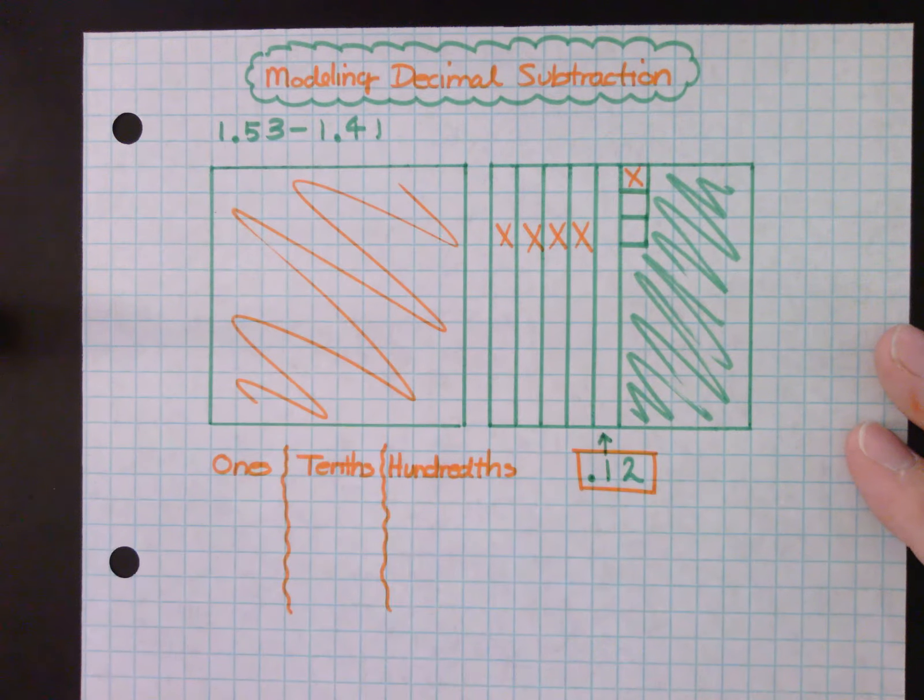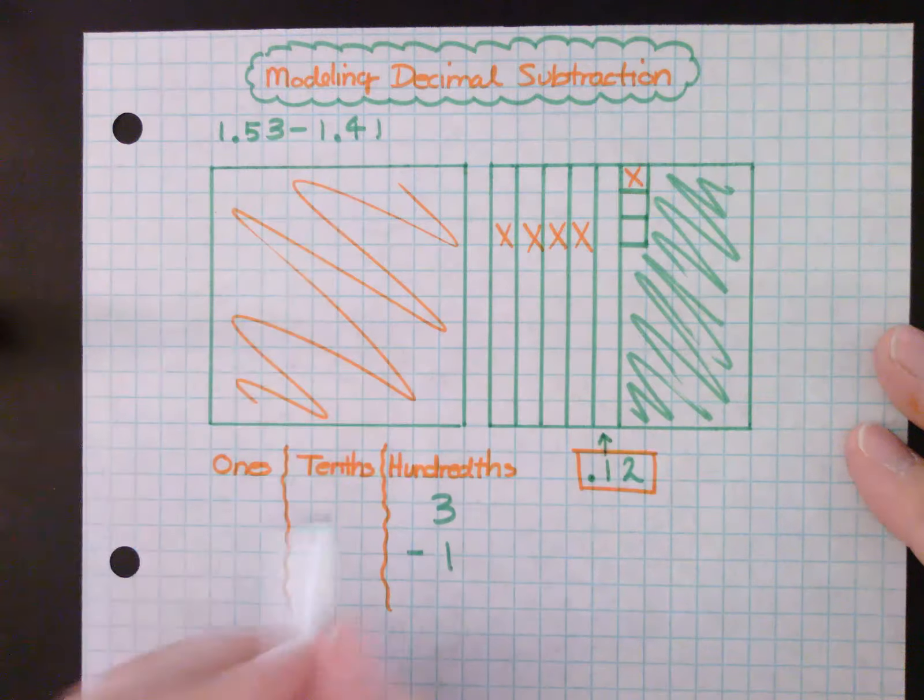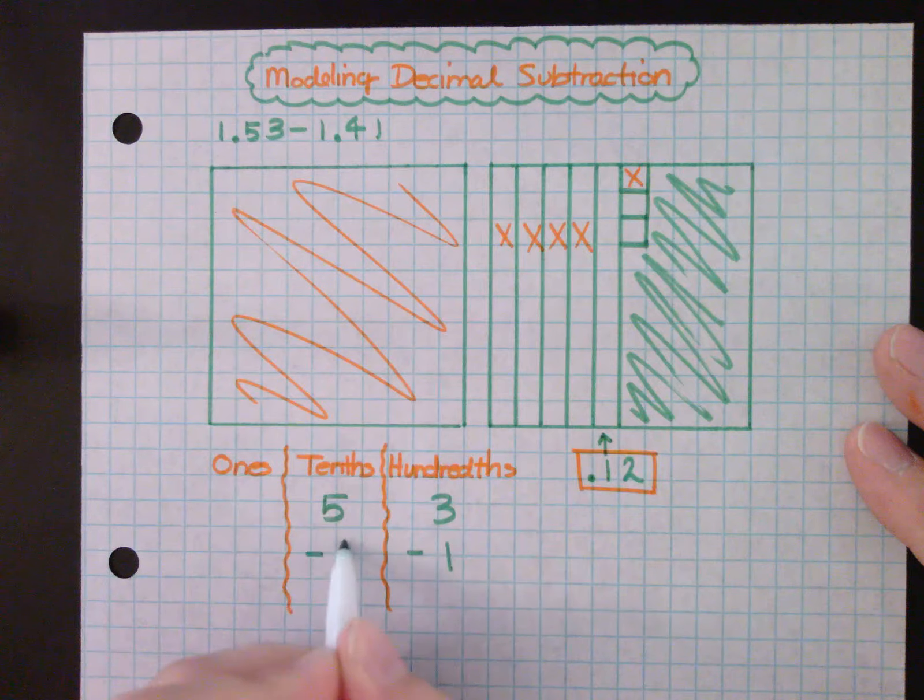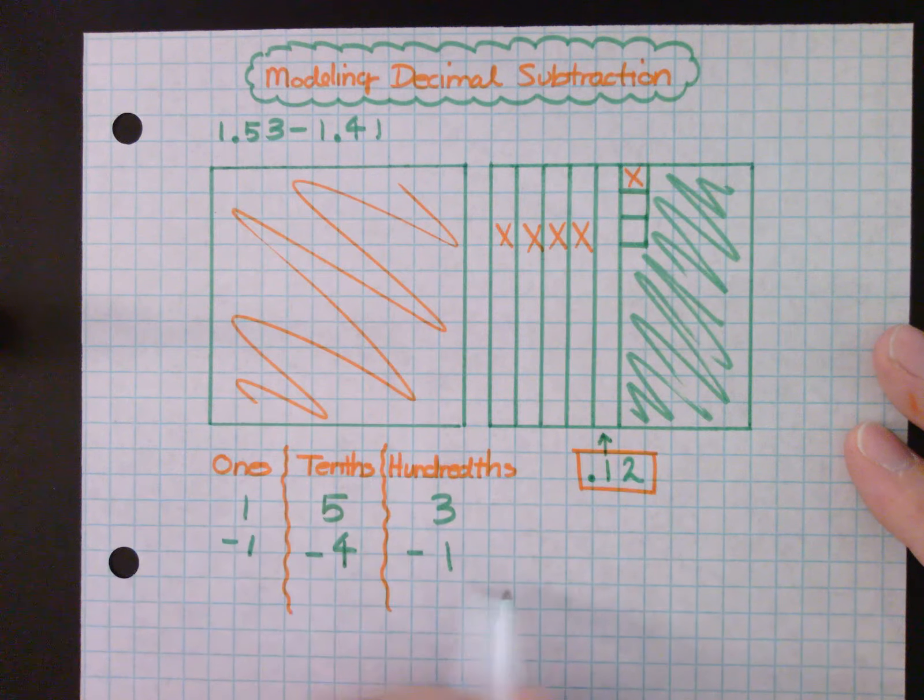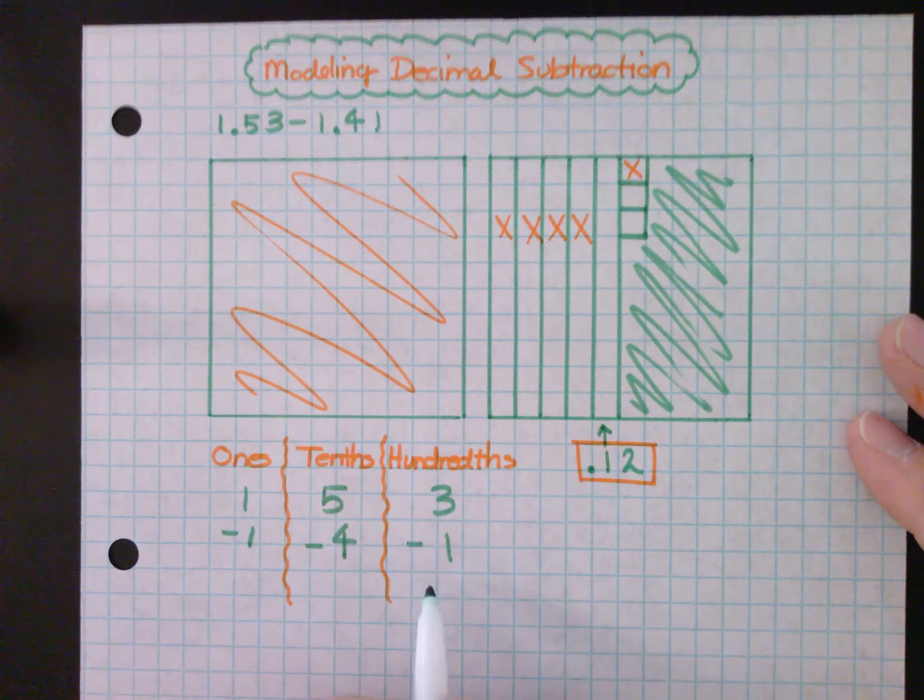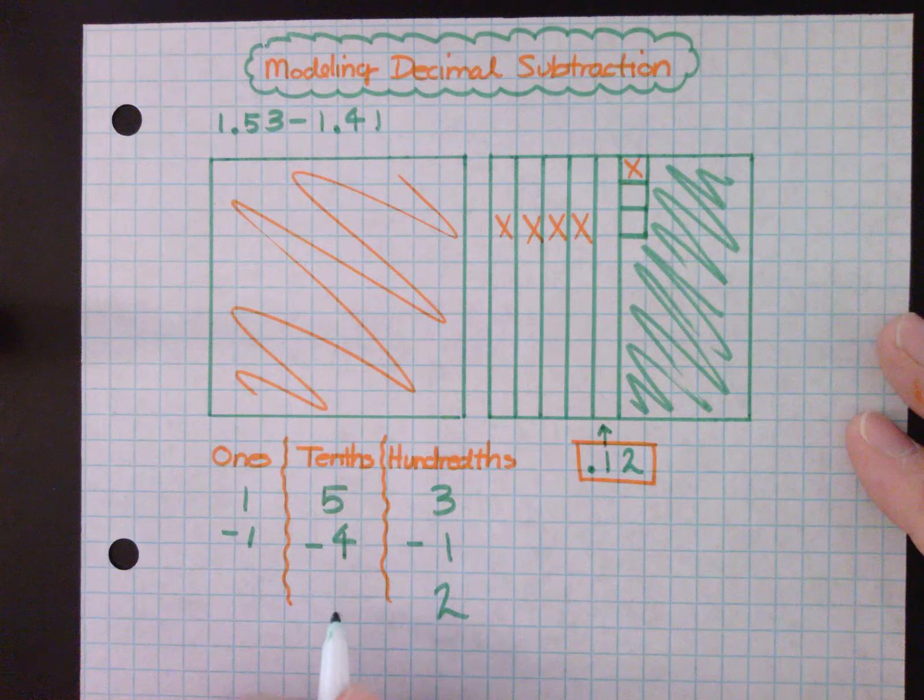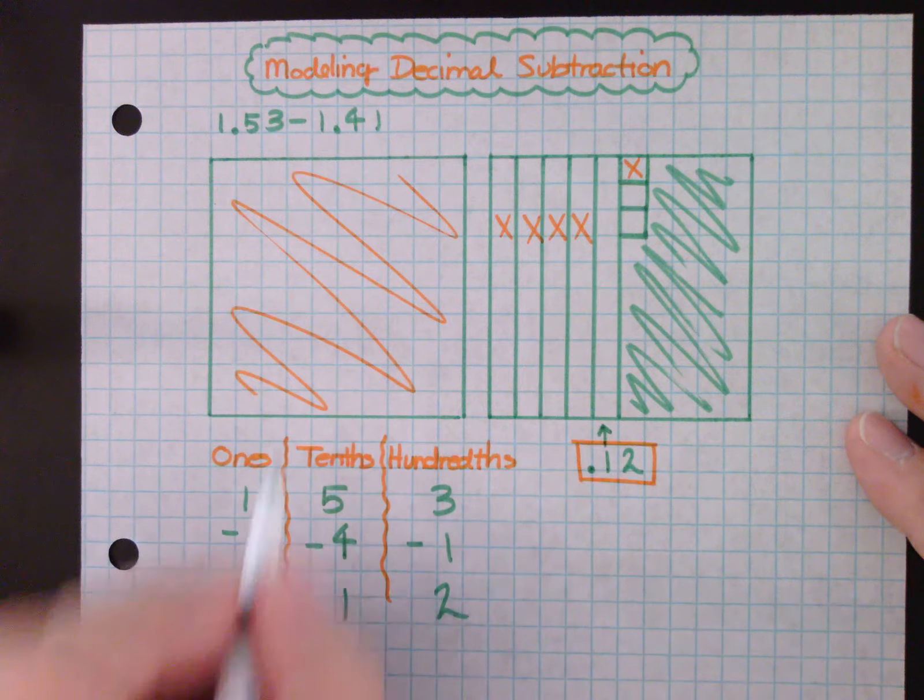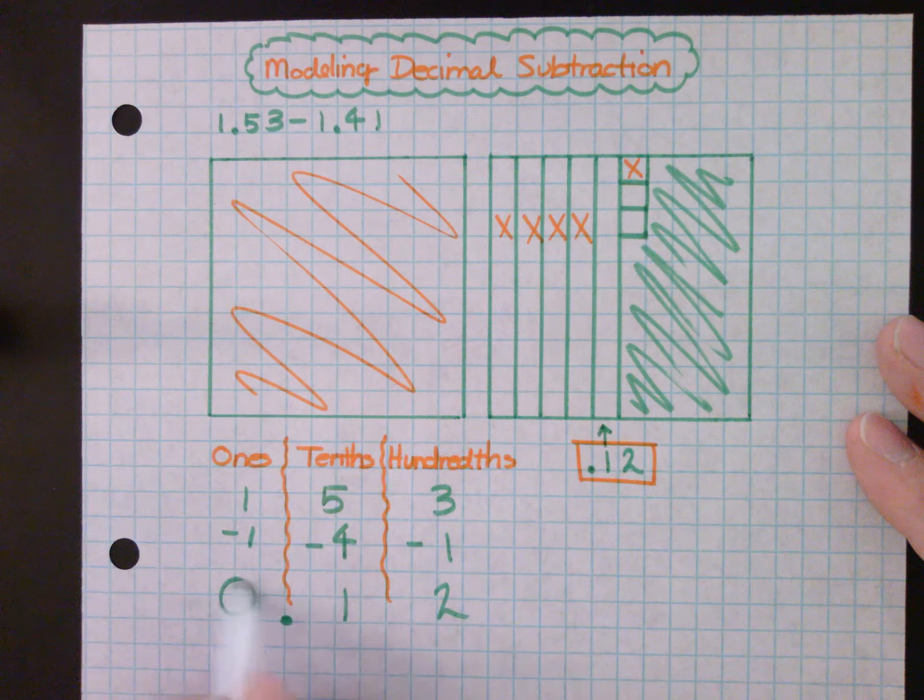Notice I have three minus one, I have five minus four, and I have one minus one. And that gives me, we always start to the right when we subtract with our numbers, three minus one is two, five minus four is one, here's my decimal, and one minus one is zero.